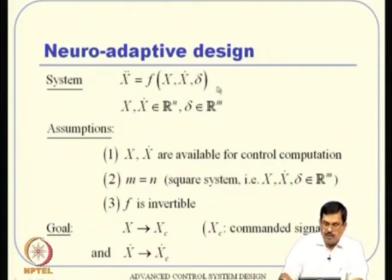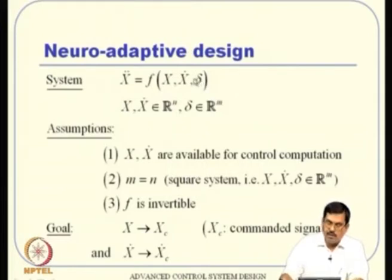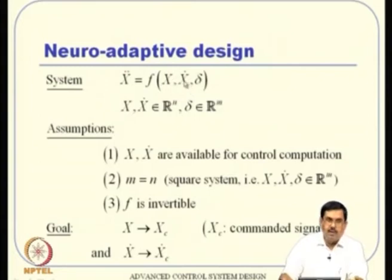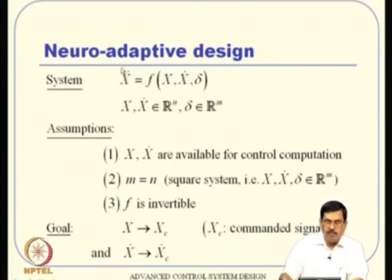The system dynamics considered here is X_double_dot = F(X, X_dot, delta), where delta is the control variable — delta_E, delta_I, delta_R are flight control surface deflections. We use the double dot form because it appears naturally from Newton's second law. For flight control on attitude (phi, theta, psi), the single derivatives are functions of P, Q, R but not of control inputs; taking double derivatives introduces P_dot, Q_dot, R_dot and the deltas appear. This flight control problem is of relative degree 2.